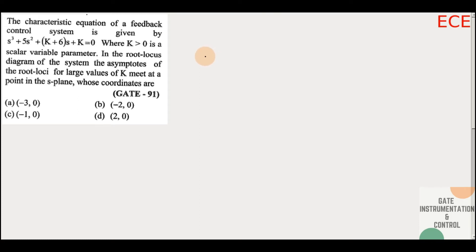Hello and welcome. The question is: the characteristic equation of a feedback control system is given by s³ + 5s² + (k+6)s + k = 0, where k > 0 is a scalar variable parameter. In the root locus diagram of the system, the asymptotes of the root loci for large values of k meet at a point in the s-plane — find its coordinates.